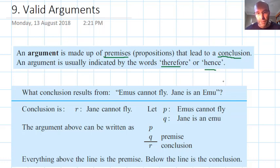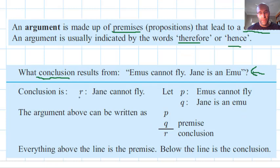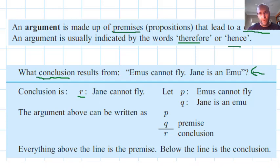Looking at an abstract example: emus cannot fly, Jane is an emu. What conclusion can we draw from this? The conclusion, given the symbol R, comes from the conjunction of the premises. Emus cannot fly is given the symbol P, and Jane is an emu is given the symbol Q.